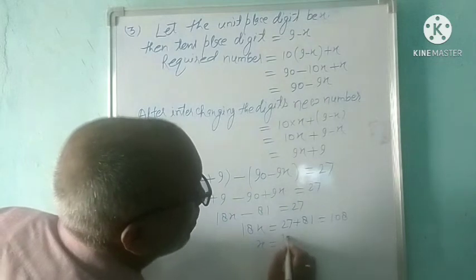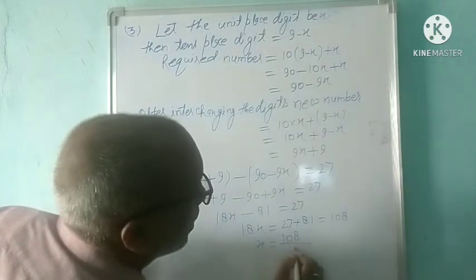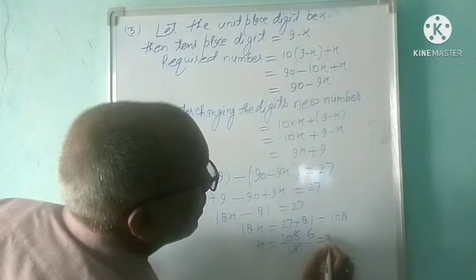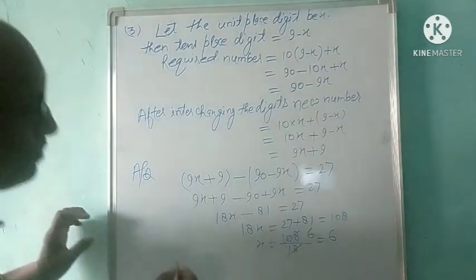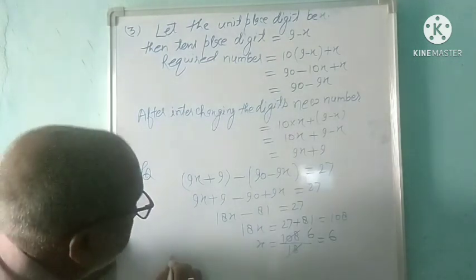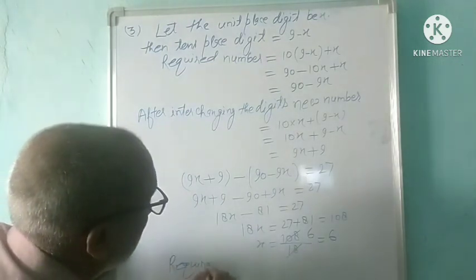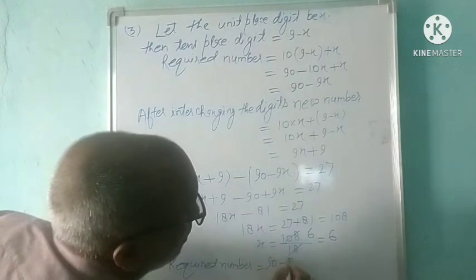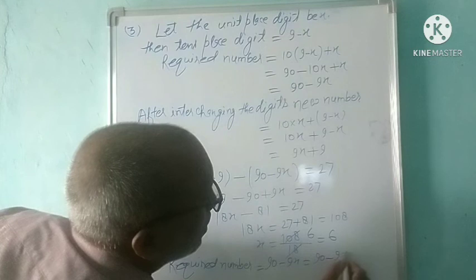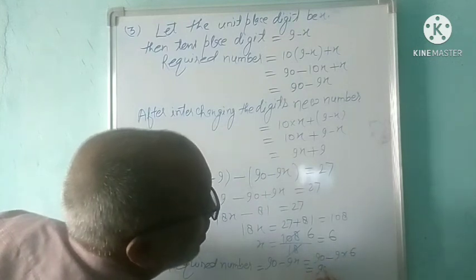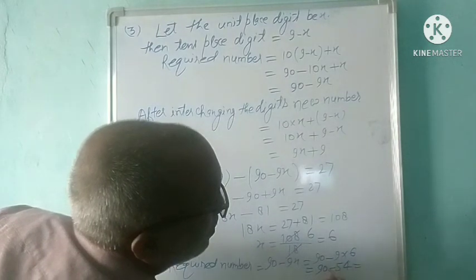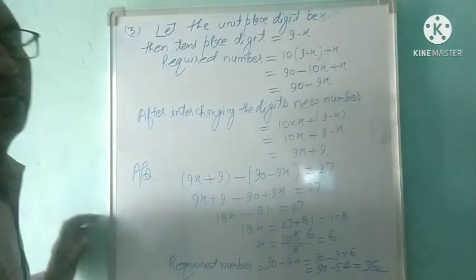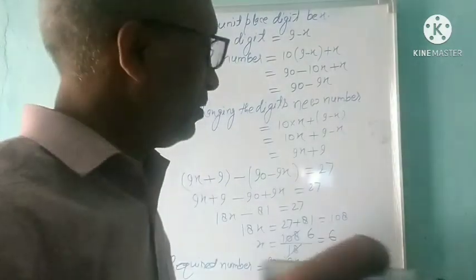Then 18x is equal to 27 plus 81, which gives x is equal to 108 upon 18, so x is equal to 6. The required number is equal to 90 minus 9x, that is 90 minus 9 into 6, which is 90 minus 54, equal to 36. The required number is 36.